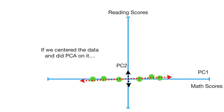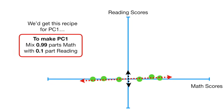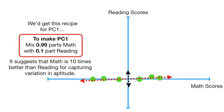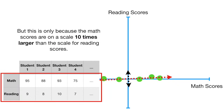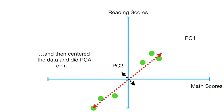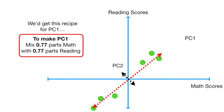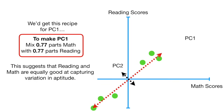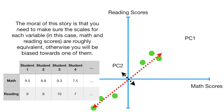If we centered the data and did PCA on it, we'd get this recipe for PC1. To make PC1, mix 0.99 parts math with 0.1 part reading. It suggests that math is 10 times better than reading for capturing variation in aptitude. But this is only because the math scores are on a scale 10 times larger than the scale for reading scores. If we divided the math scores by 10 and re-plotted, and then centered the data and did PCA on it, we'd get: mix 0.77 parts math with 0.77 parts reading. This suggests that reading and math are equally good at capturing variation in aptitude. The moral is that you need to make sure the scales for each variable — in this case, math and reading scores — are roughly equivalent, otherwise you will be biased towards one of them.